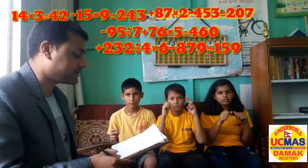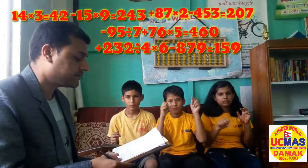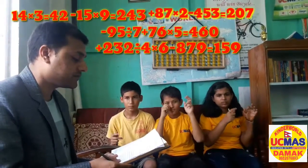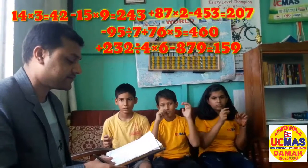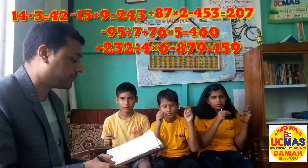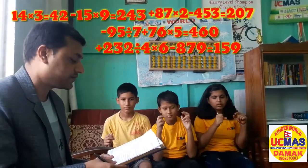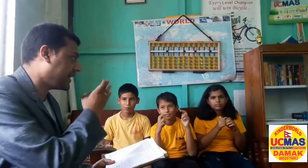460 plus 232 divide by 4 into 6 minus 879 equals to — yes, 159 is the right answer! So please don't forget to like, comment, and share.